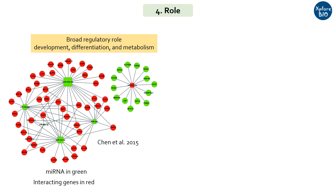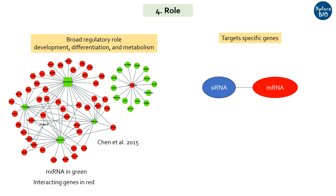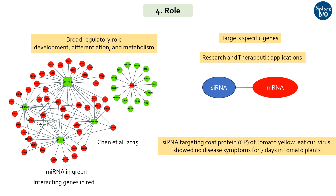Now let's see the differences based on the role in cellular processes. miRNA plays a broader role in gene regulation by affecting the expression of a network of genes, influencing various processes like development, differentiation, and metabolism. siRNA targeting is highly specific and thus is primarily used to silence specific genes for research and therapeutic purposes. For example, siRNA targeting of the coat protein of Tomato Yellow Leaf Curl Virus reduced disease occurrence in tomato plants. Thus, siRNA can be used to generate disease-resistant transgenics.